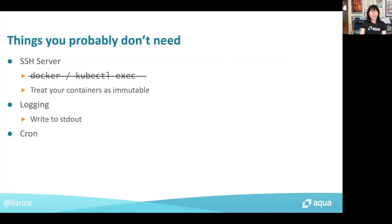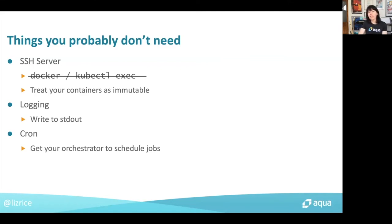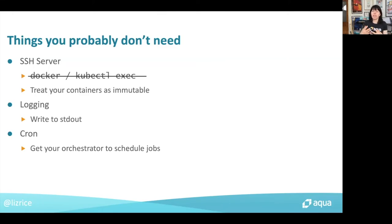Cron is a really interesting example. In cloud-native, you may have things that need to run on a schedule. But rather than starting a container and having cron inside it that then schedules jobs, the cloud-native approach would be to have a container that runs an individual job and then have orchestration-level scheduling to determine when to run those jobs. So you don't need cron inside the container because the orchestrator should be doing that for you.